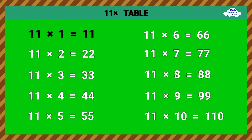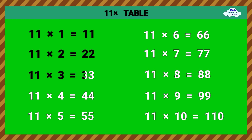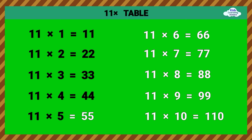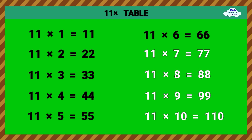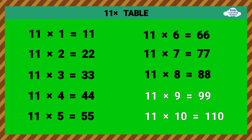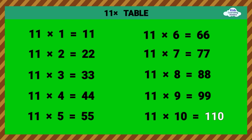Eleven times table. 11 times 1 equals 11. 11 times 2 equals 22. 11 times 3 equals 33. 11 times 4 equals 44. 11 times 5 equals 55. 11 times 6 equals 66. 11 times 7 equals 77. 11 times 8 equals 88. 11 times 9 equals 99. 11 times 10 equals 110.